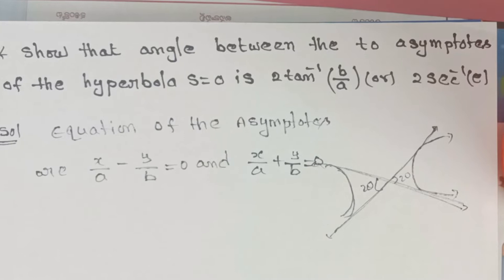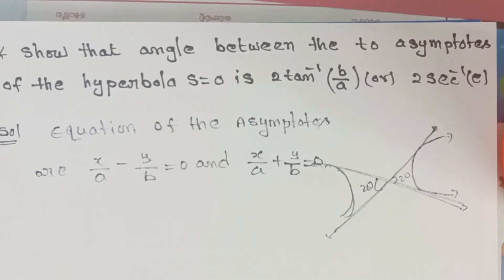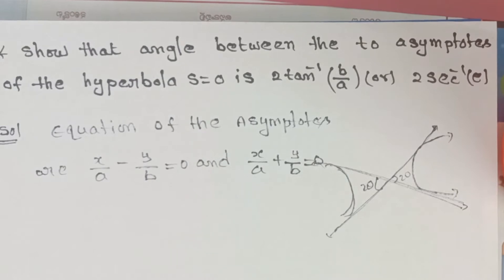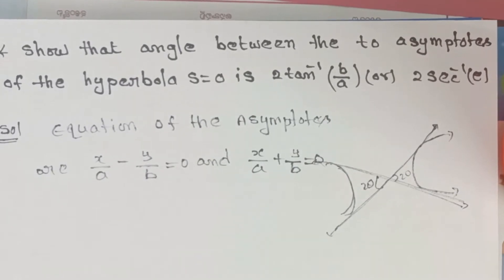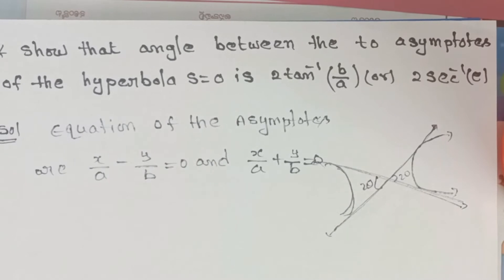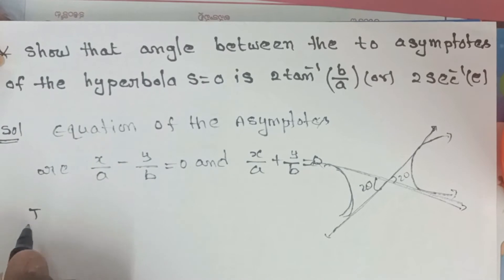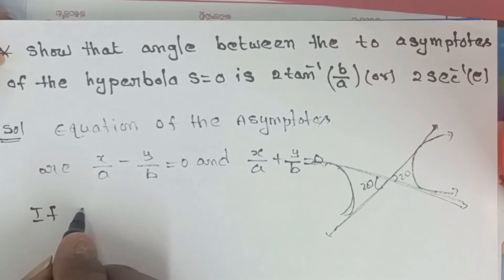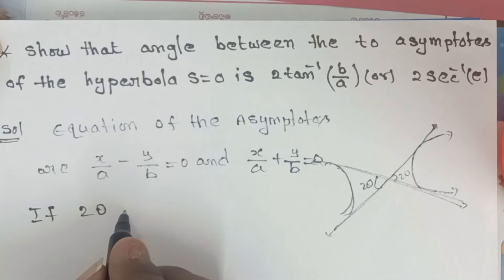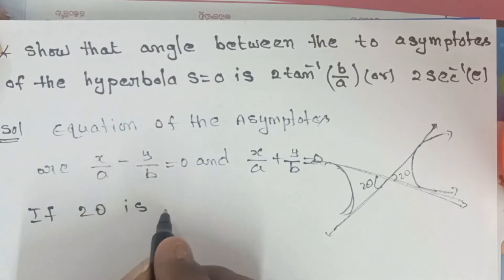So x²/a² − y²/b² = 0, and (x/a)² − (y/b)² = 0. Using the difference of squares formula, this becomes (x/a − y/b)(x/a + y/b) = 0. These two lines are called asymptotes.